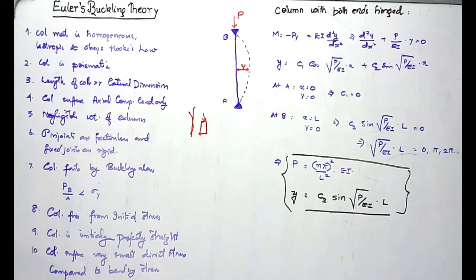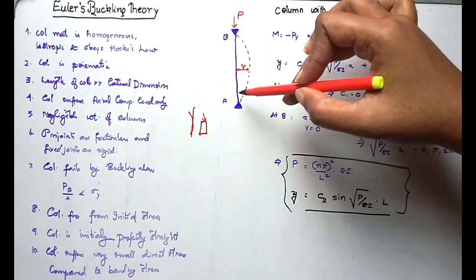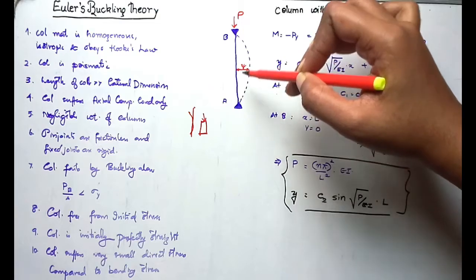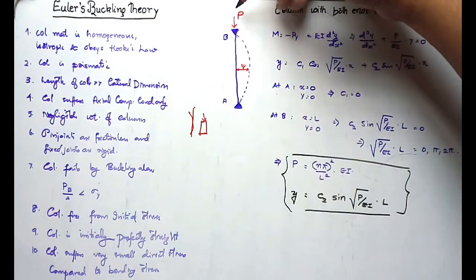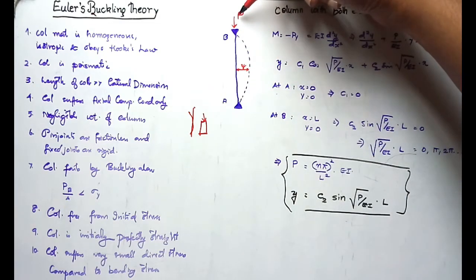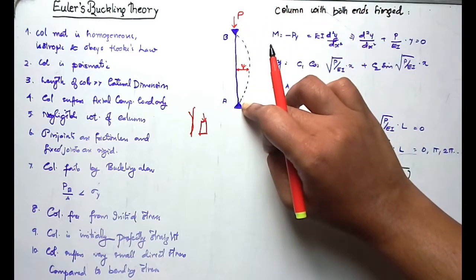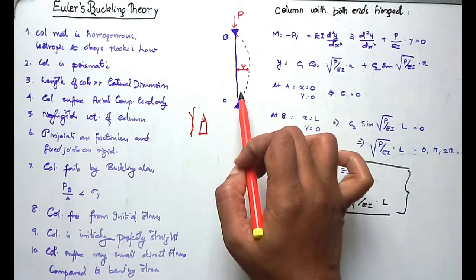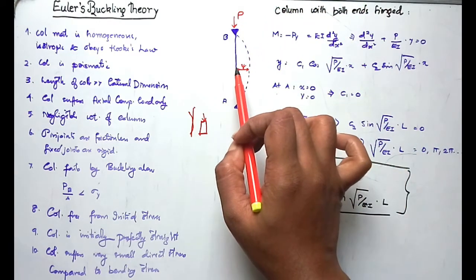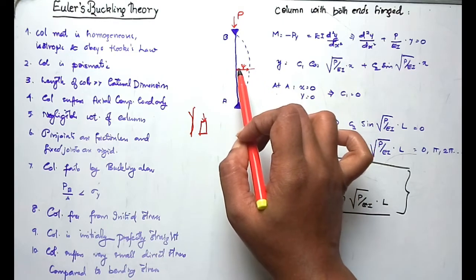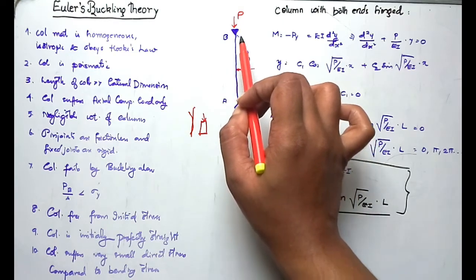Now I will derive the buckling load for an idealized column. Consider a column AB with both ends hinged, subjected to a load P. The column is buckling, so we take a section along the column. The x-axis is taken along the column length.